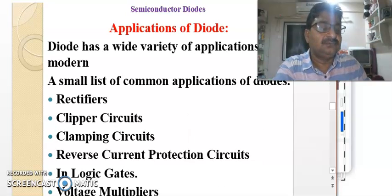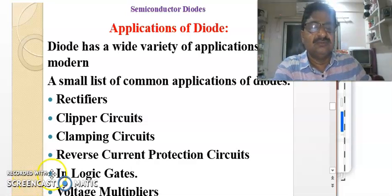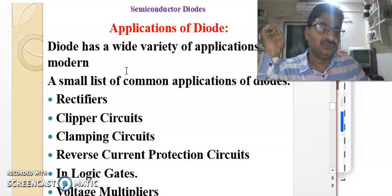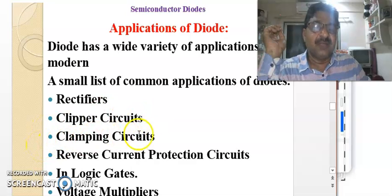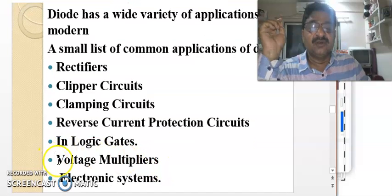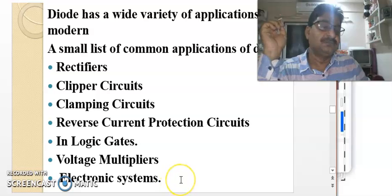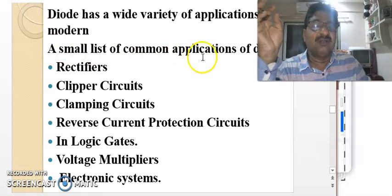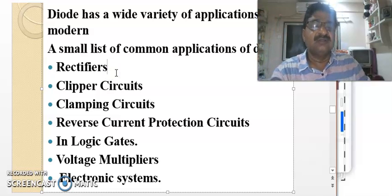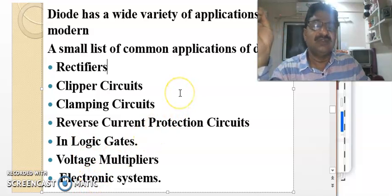Now, what are the applications of a diode? There are several applications in modern electronics. A list includes: rectifiers, clipper circuits, clamping circuits, reverse current protection circuits, logic gates, voltage multipliers, and various electronic systems. A rectifier is a device that uses a diode to convert AC into DC. In this way, diodes are utilized across various electronic devices.